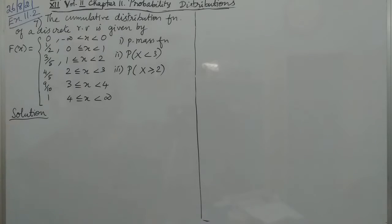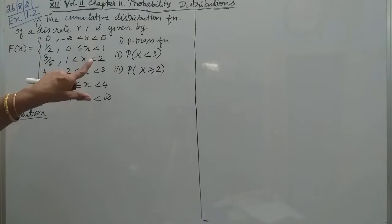Welcome to Exercise 11.1, Sum Number 7. The Cumulative Distribution Function of a discrete random variable is given by... I am going to show you the probability mass function, and probability of X less than 3, and probability of X greater than or equal to 2.